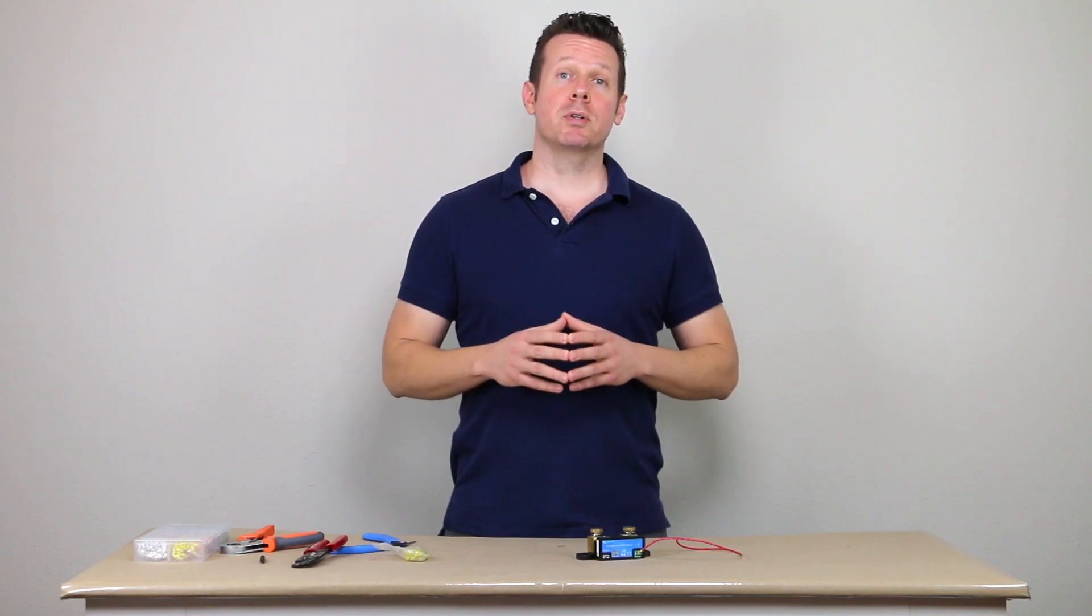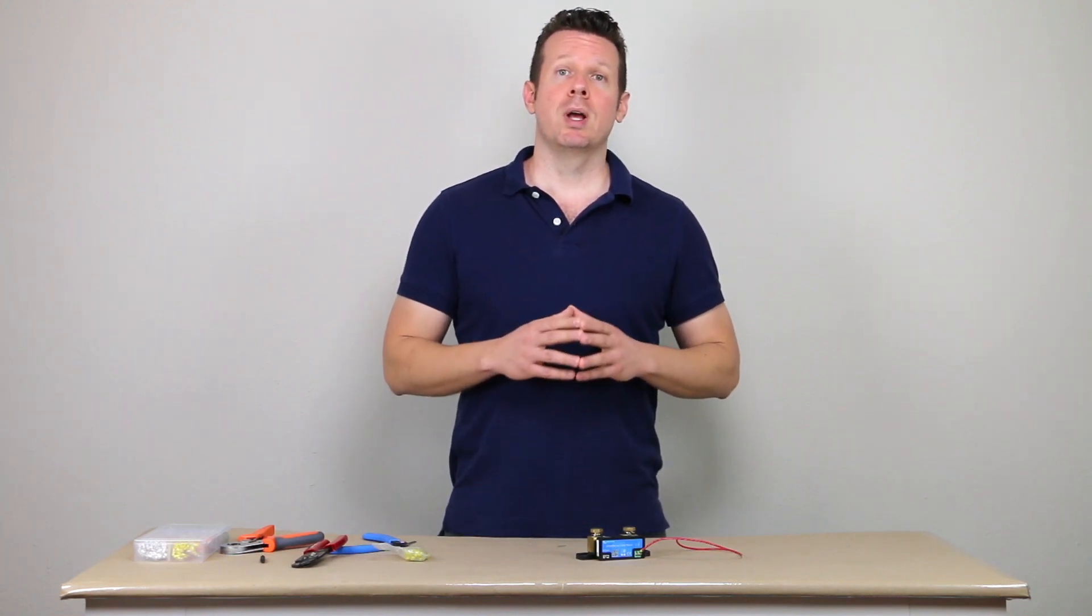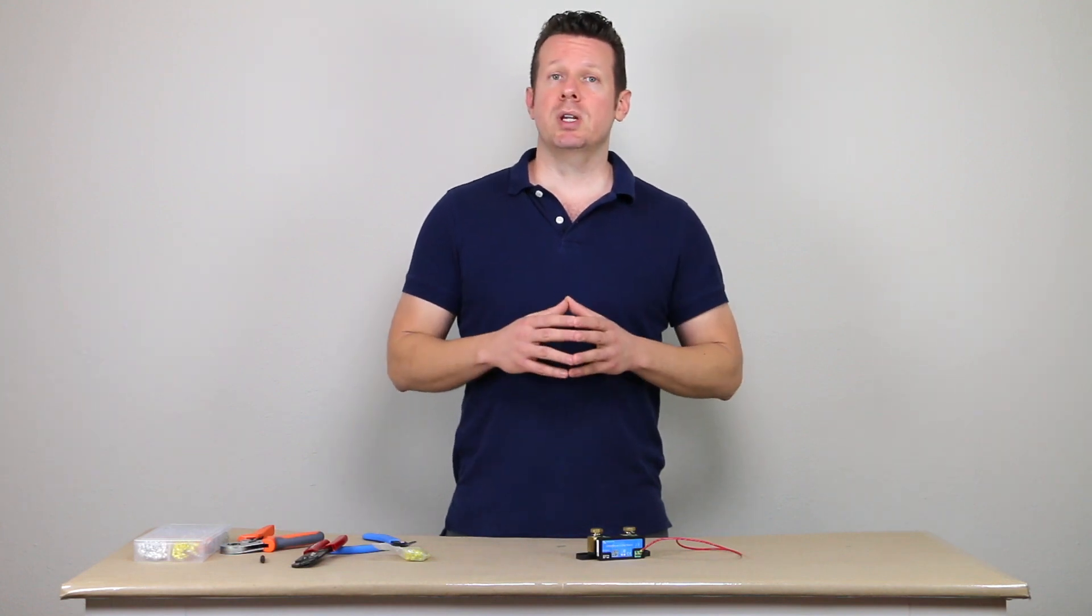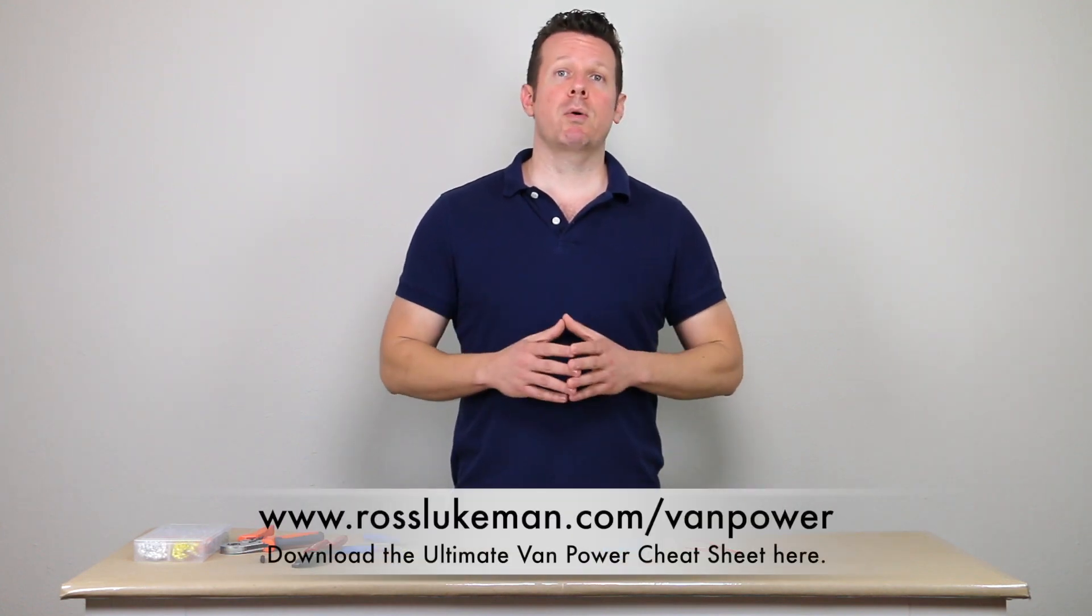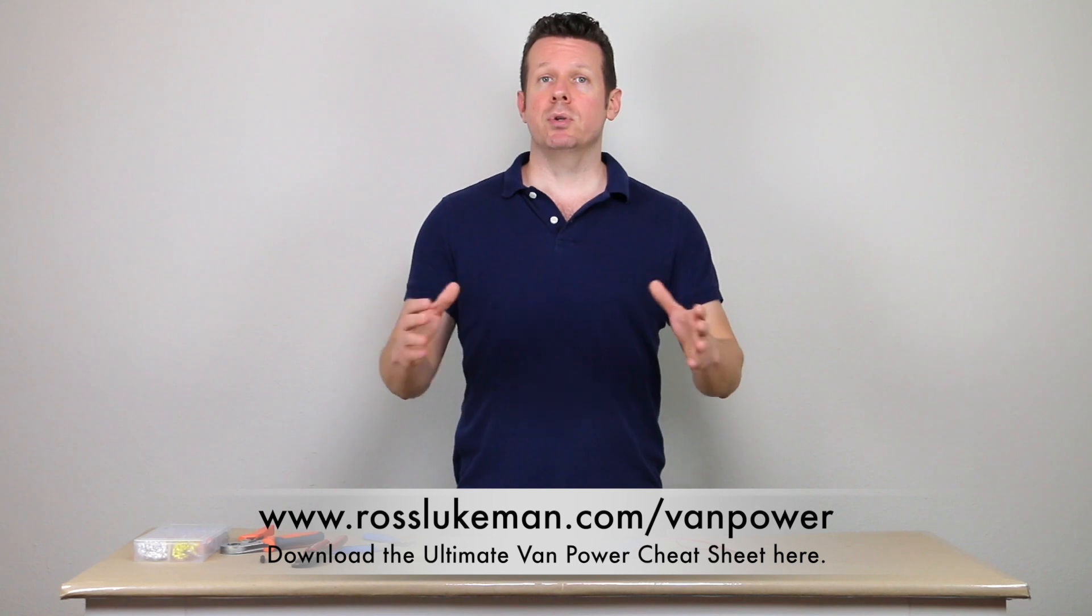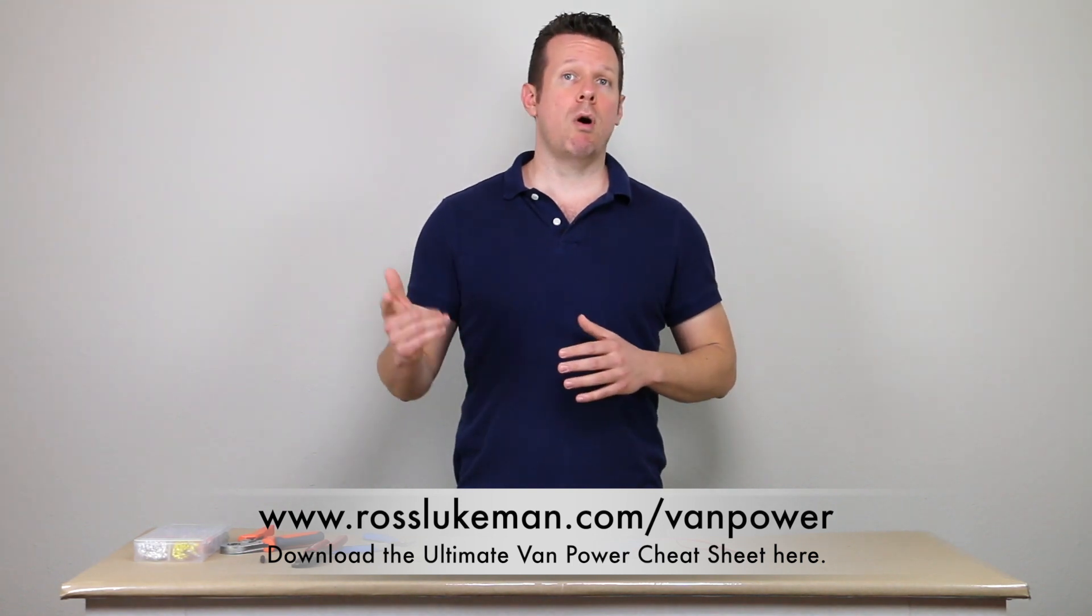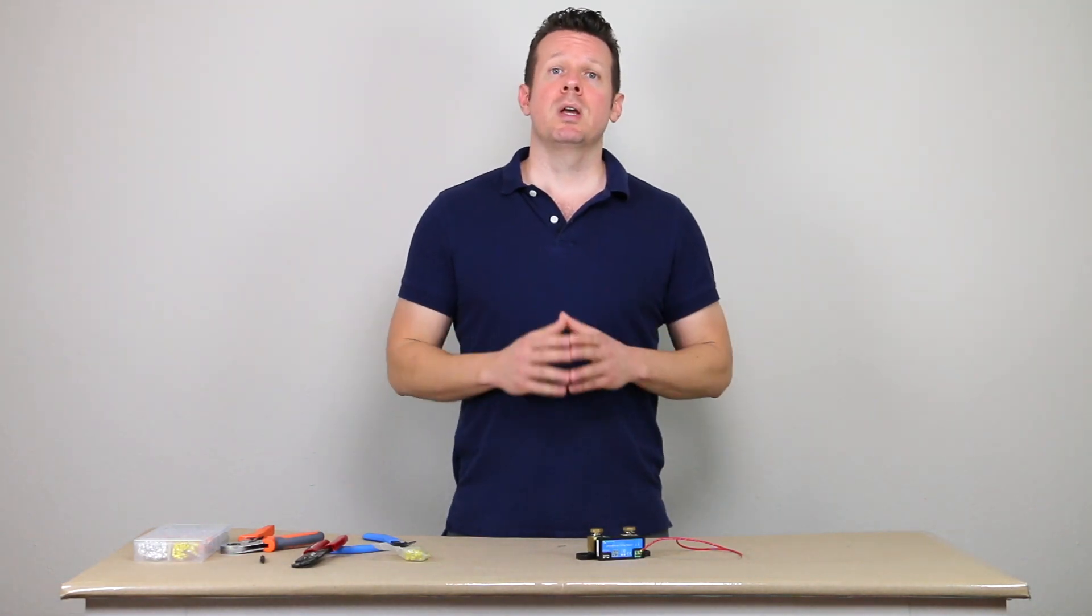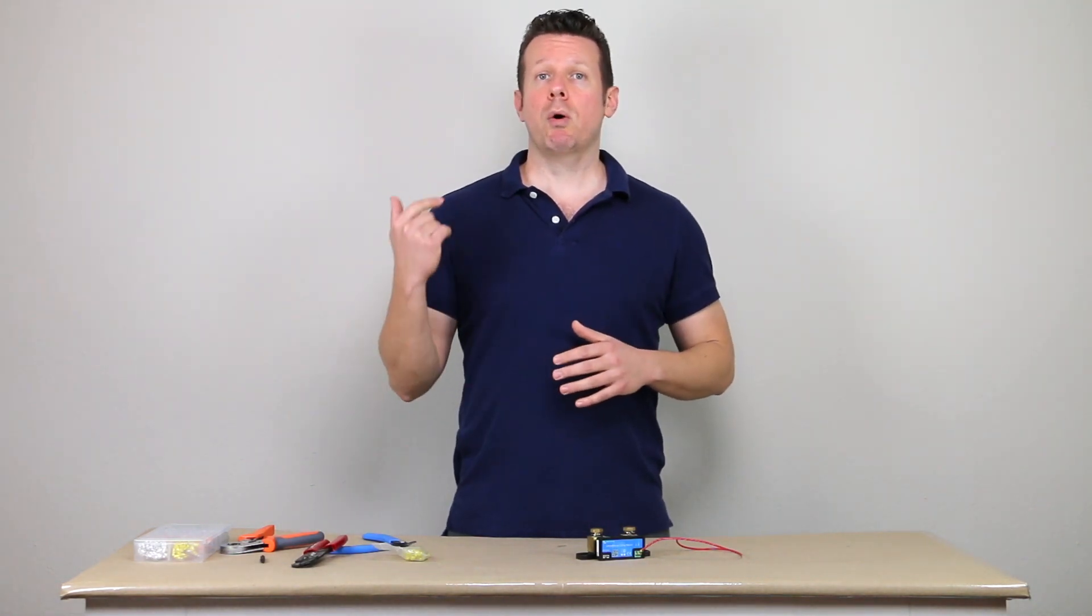Now, before we get into the part numbers for the specific ferrules that I recommend and the ferrule crimper, I've got a resource that you may be interested in. It's called the Ultimate Van Power Cheat Sheet. And it's great if you're doing a power system for a van or RV, there's a discussion of the three major charging sources for your power system, including solar power, shore power,